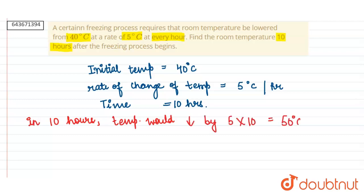Therefore, our final temperature would be initial temperature minus our reduced temperature, that is 40 minus 50, that is negative 10 degrees Celsius. And this is our answer.